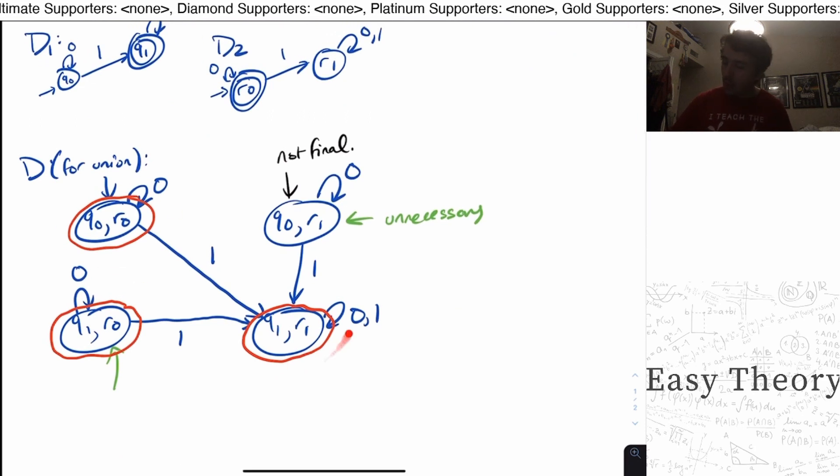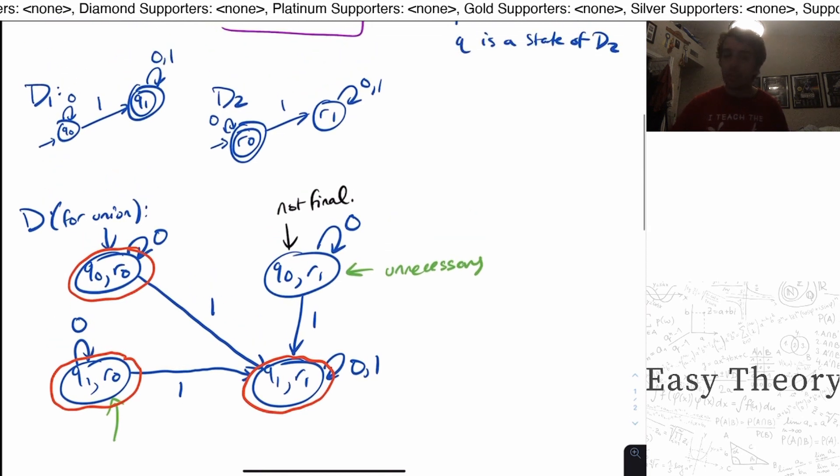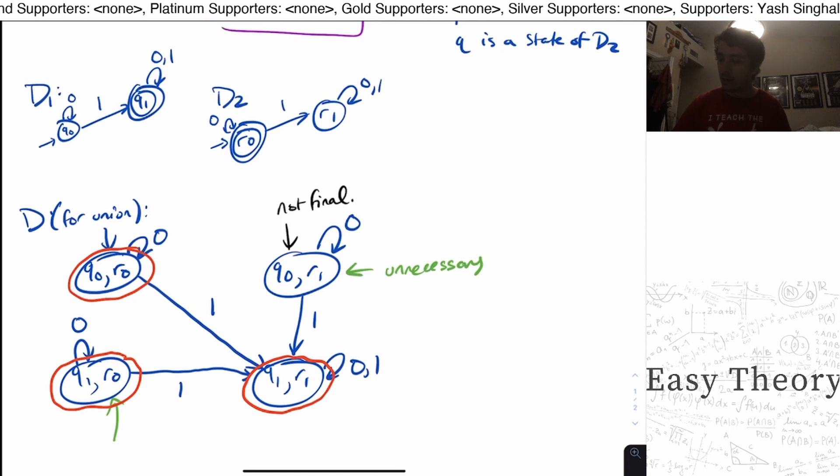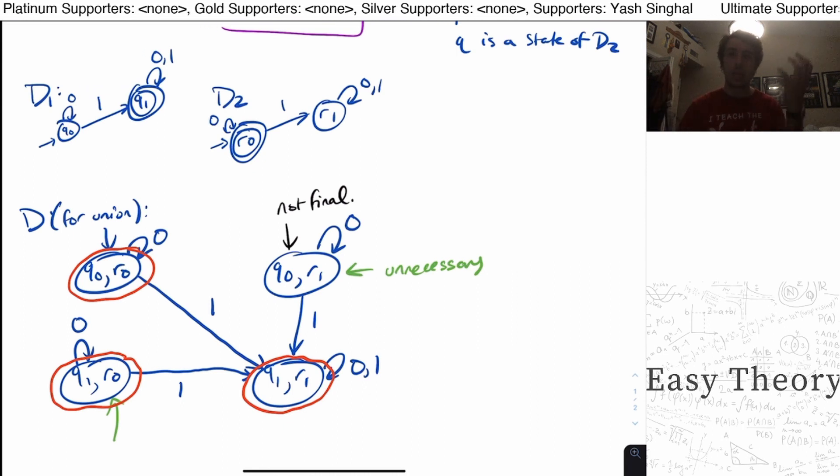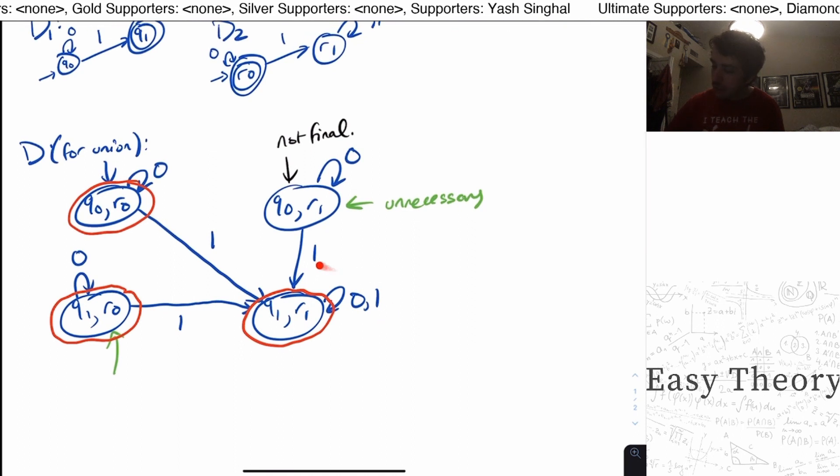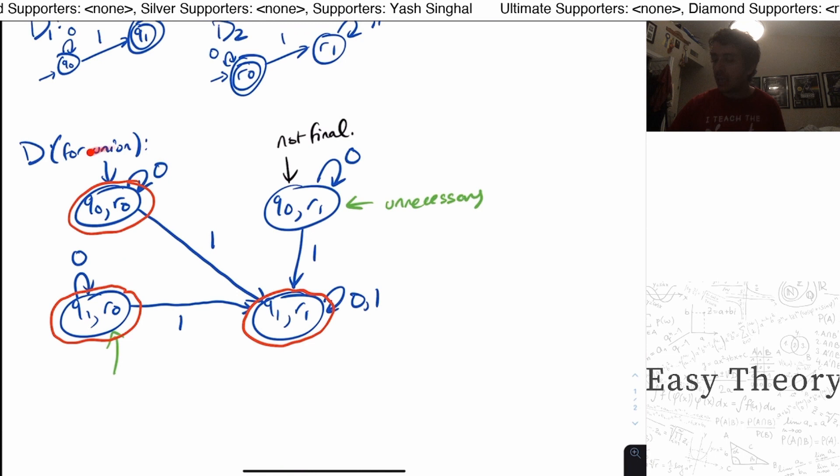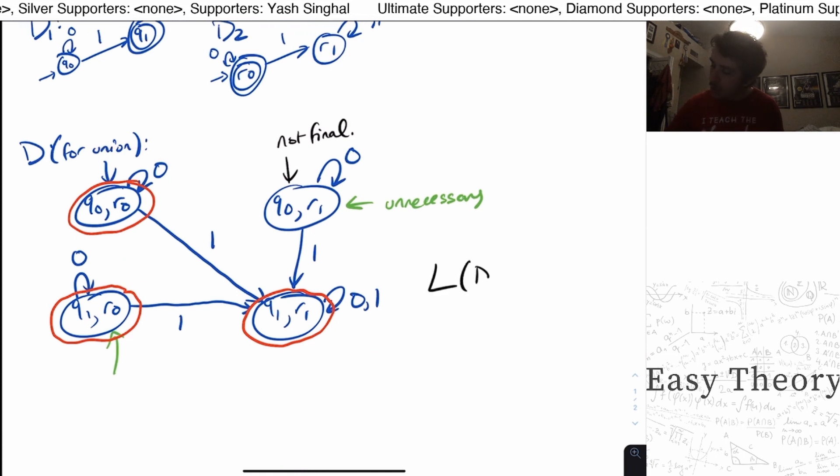But what about this one? So for union, what is this here? Well, note that these two DFAs were the complements of each other. The final states of one were the complement of the final states of the other one. So the union of a language and its complement is sigma star. And we can verify this for ourselves in this DFA by looking at these two states and seeing that every single string is accepted. So the language of D in this case is sigma star.